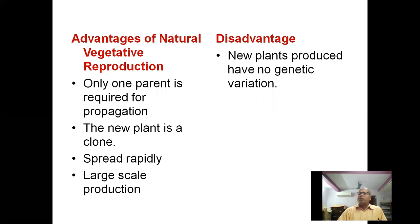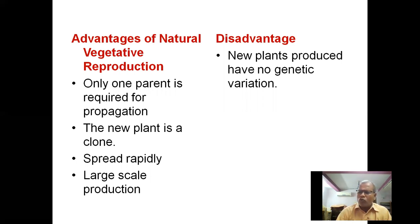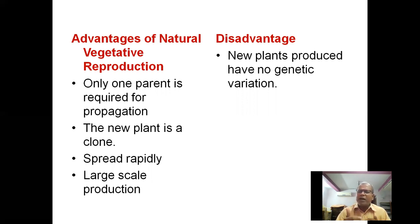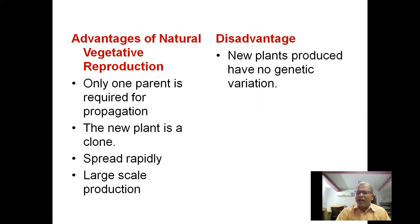The exchange of genetic material takes place between non-sister chromatids of homologous chromosomes — that is called crossing over. Crossing over is responsible for recombination and leads to the formation of new varieties, playing an important role in evolution and the origin of new species. In vegetative propagation, the newly formed plants are genetically similar without any genetic variation.